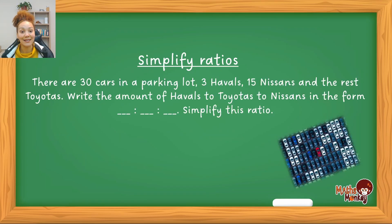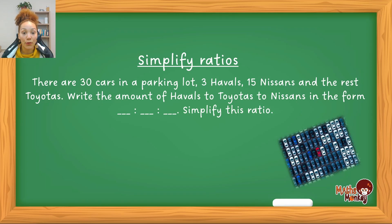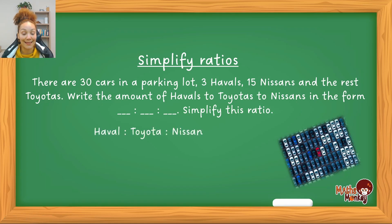First we'll start with simplifying ratios. The example says: there are 30 cars in a parking lot — 3 Havals, 15 Nissans, and the rest Toyotas. Write the amount of Havals to Toyotas to Nissans in ratio format and simplify. The order in which you give your answer matters — it must be Haval first, then Toyota, then Nissan.